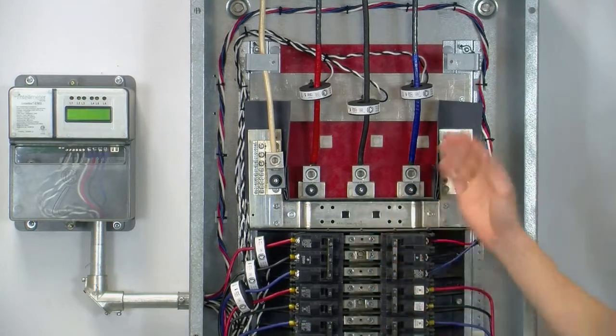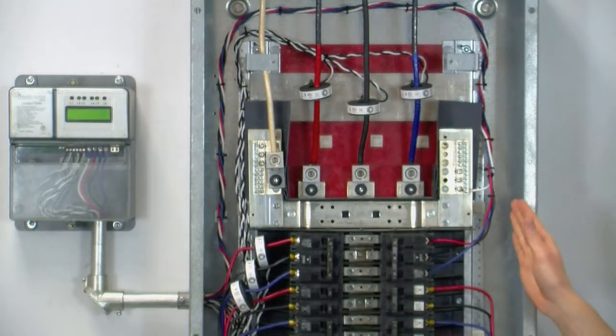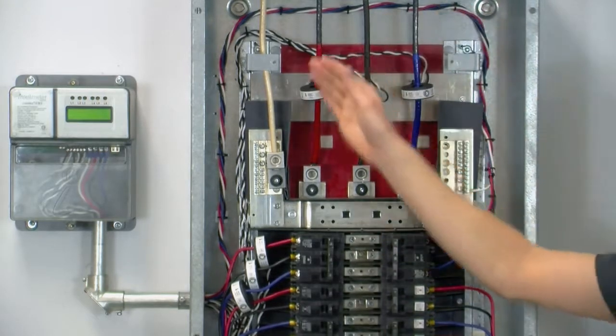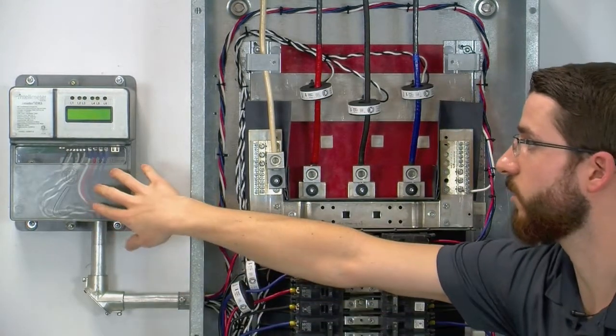So now that our CTs are installed, as well as our reference voltage, we are now safe to pull the wires across the panel, through the conduit, and into the meter enclosure.